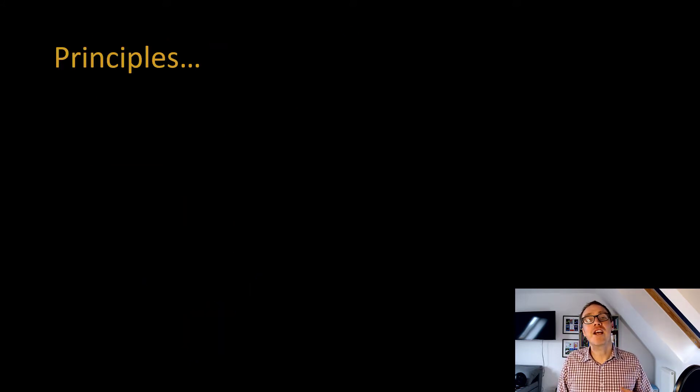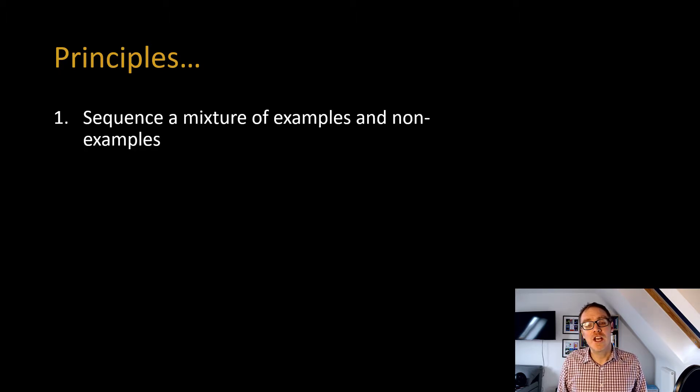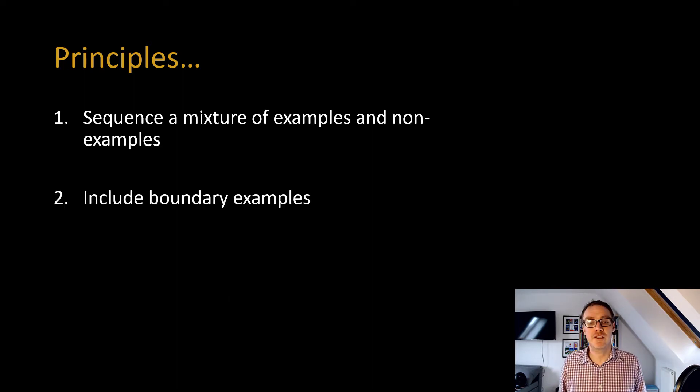So when I'm trying to explain a concept to students now, I have three principles that I try to adhere to. So the first is, as we've just discussed there, I try and sequence a mixture of examples and non-examples. But I also do two other things. So the first is I include boundary examples. Examples right at the boundary of where that concept is or that concept isn't. I'll show you an example of that in a second.